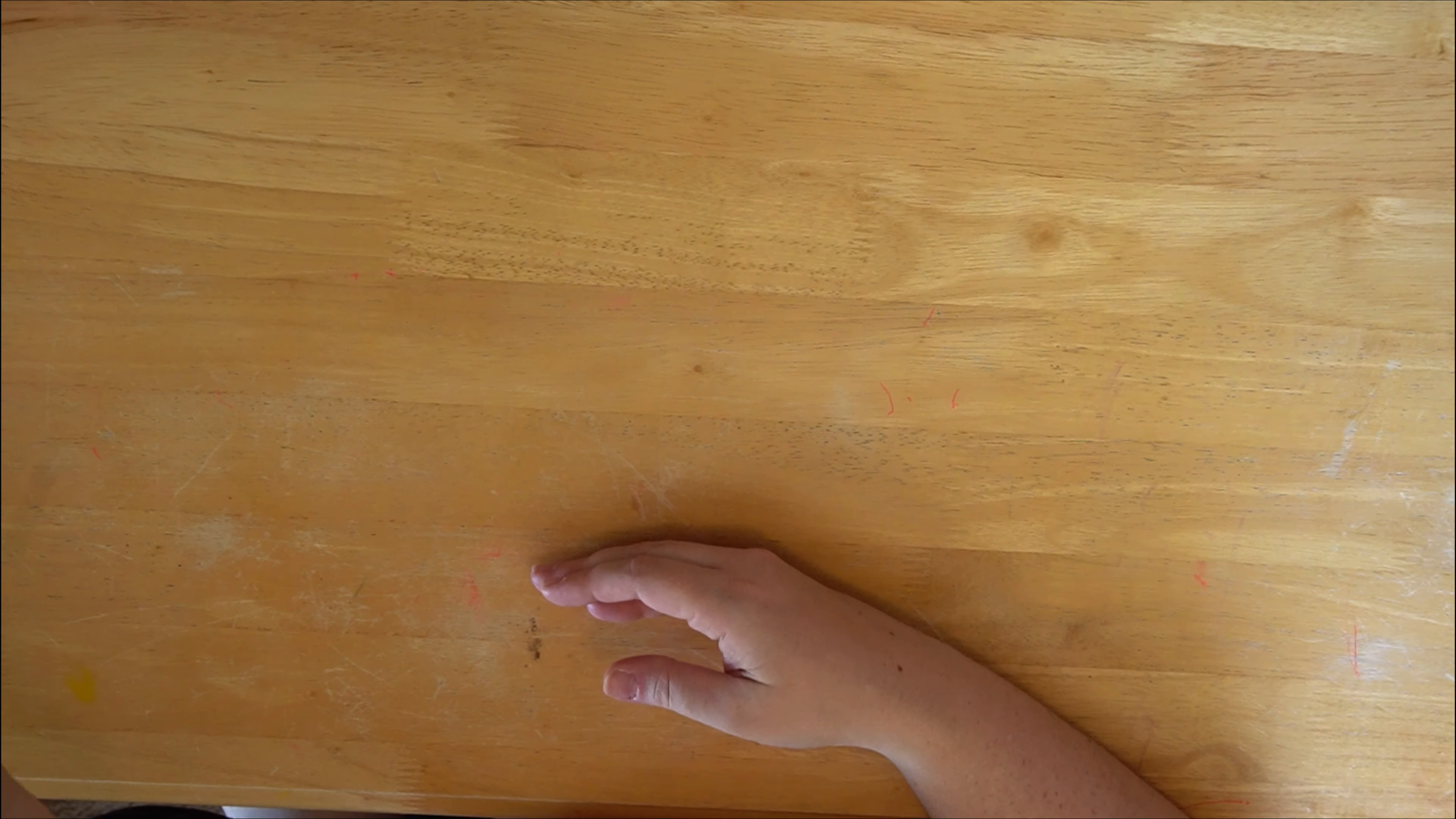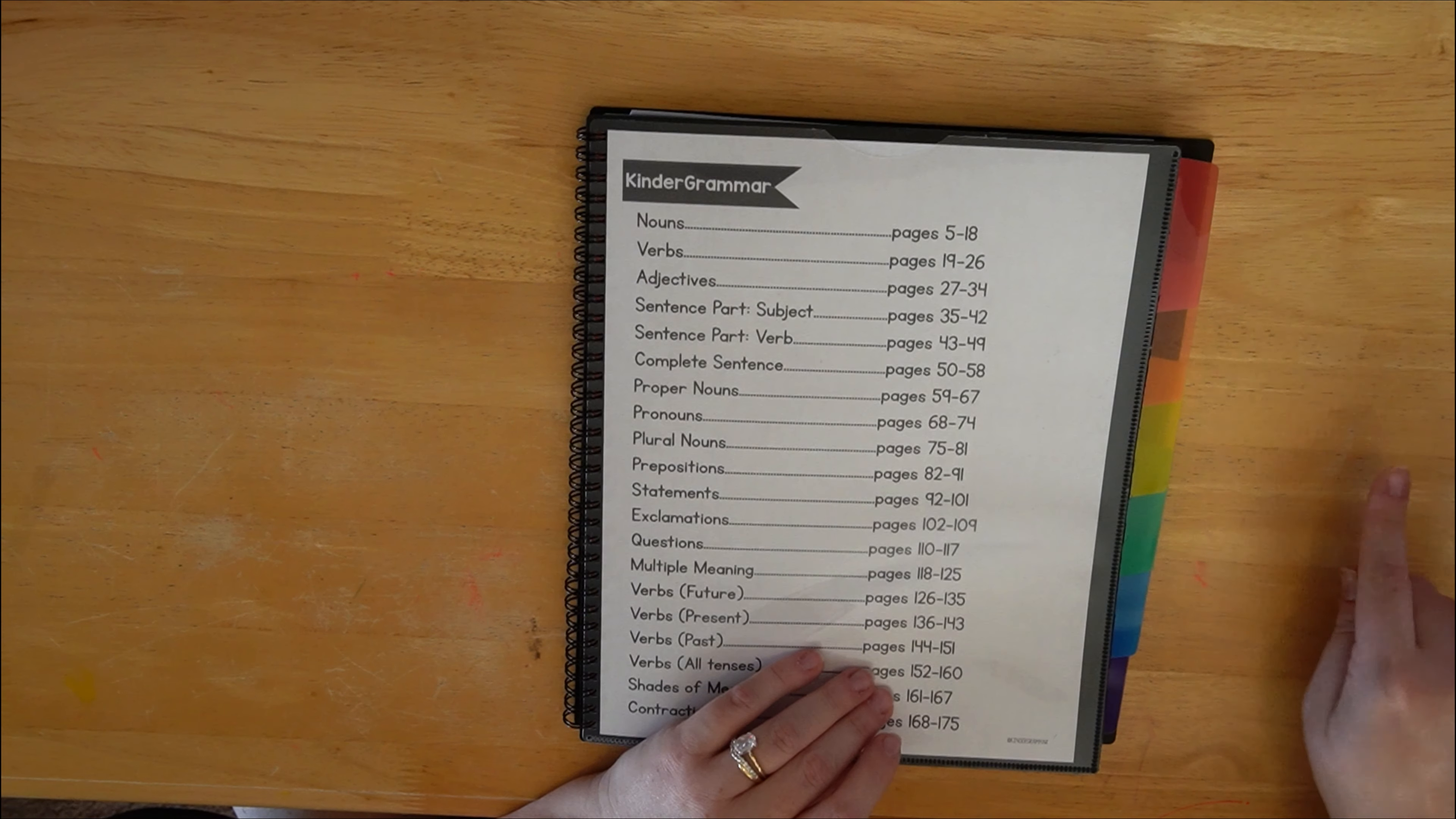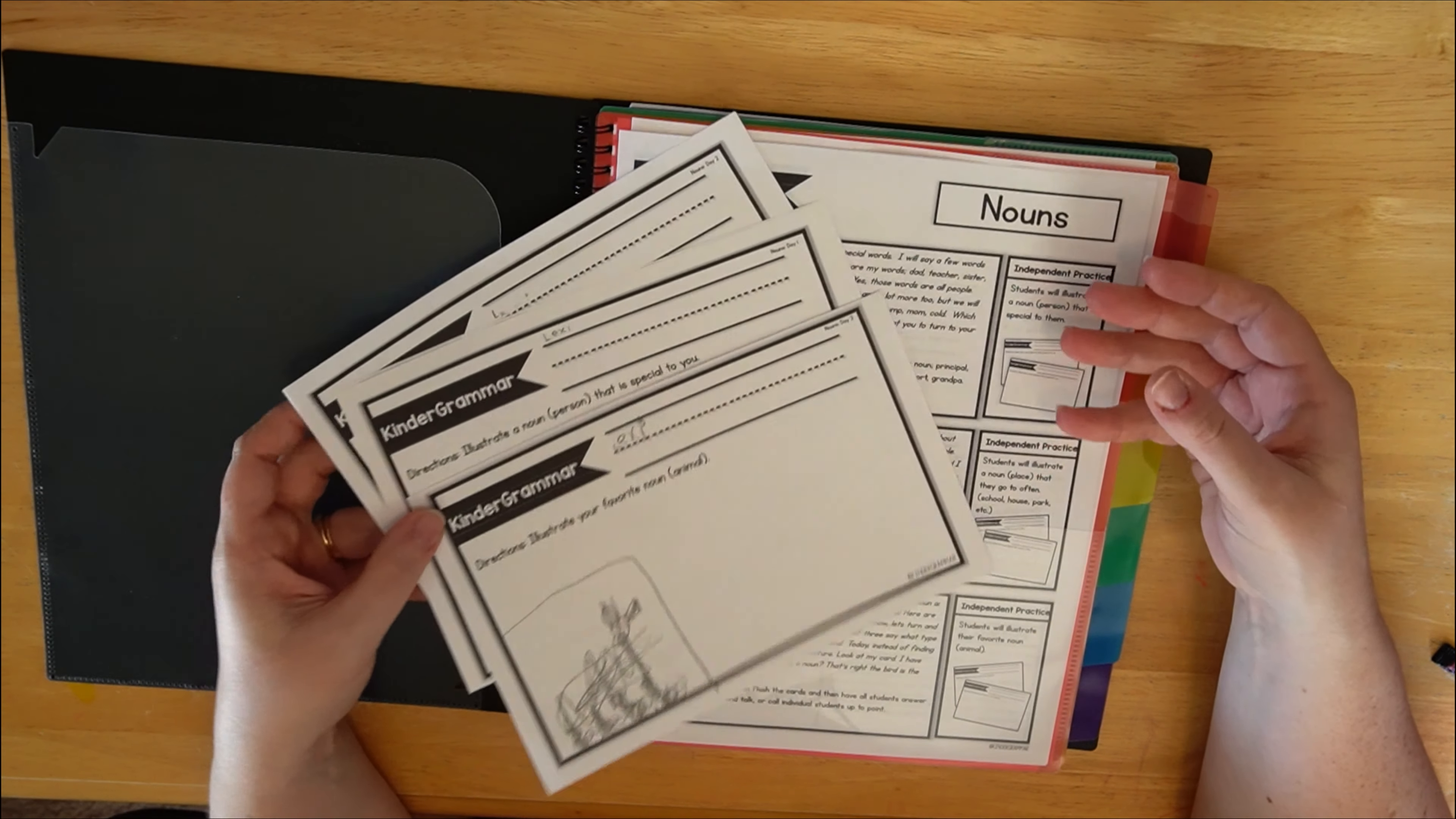Last two subjects are grammar and reading. So with grammar, we have Kinder Grammar. This is from Tara West. Again, third time using it. Love it. I will say that I think you could use this for both kinder and first grade. I also think that the second grade grammar you could use for second and third, and then third grade grammar for third and fourth. My opinion. Anyways, so that is a look of everything that's included throughout the entire year for kindergarten. So I just keep that on the front just for myself.